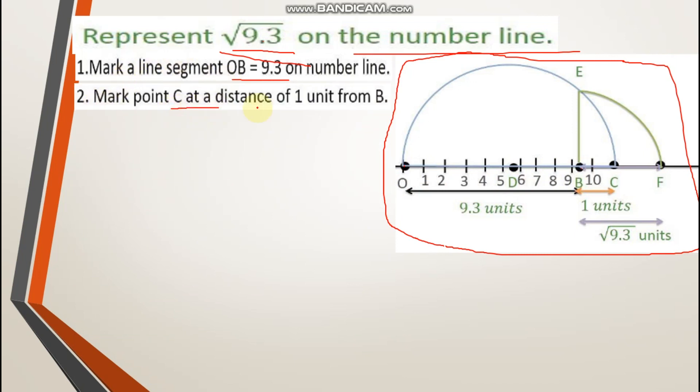Next step, mark point C at distance of one unit from B. You have to take one unit distance from B to C. That means 10.3 will be your point. 9.3 was here, plus one unit will make it 10.3, which you will mark as C.